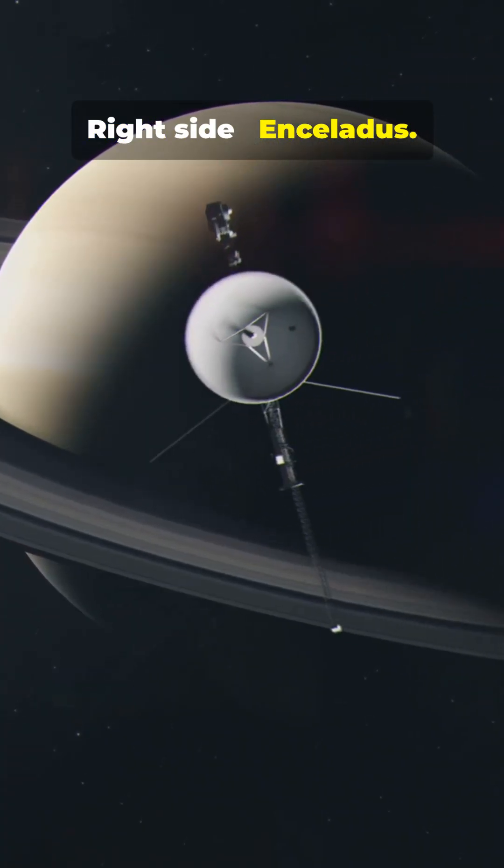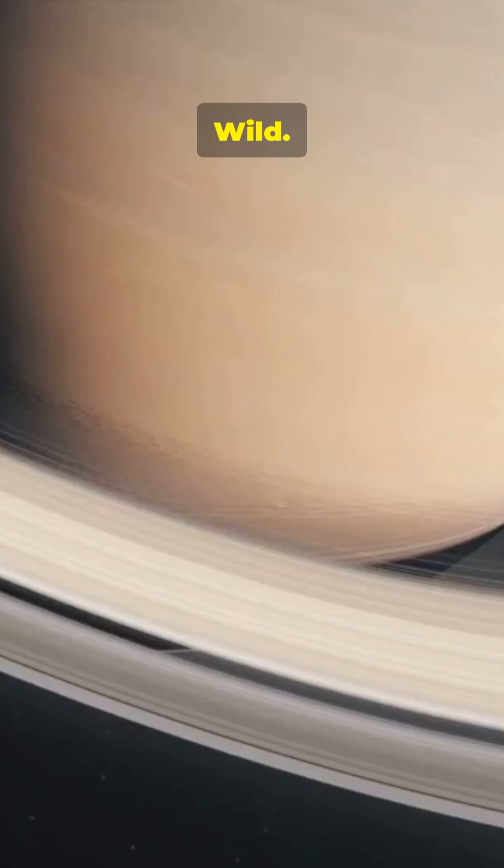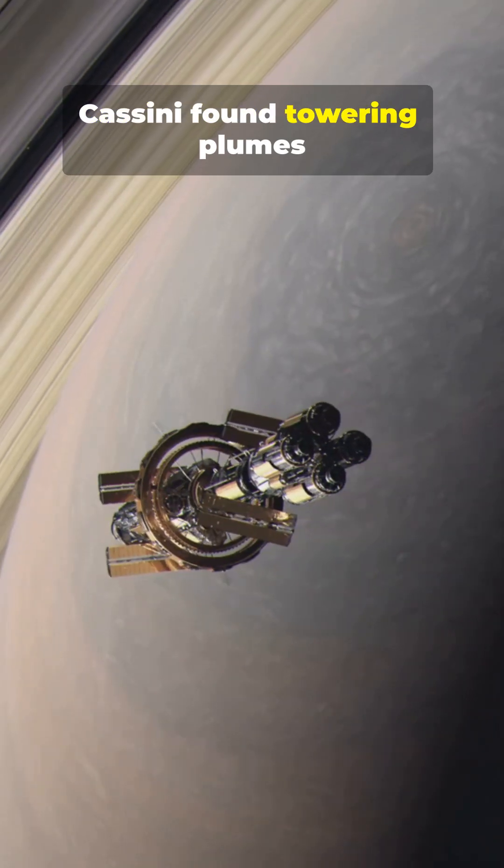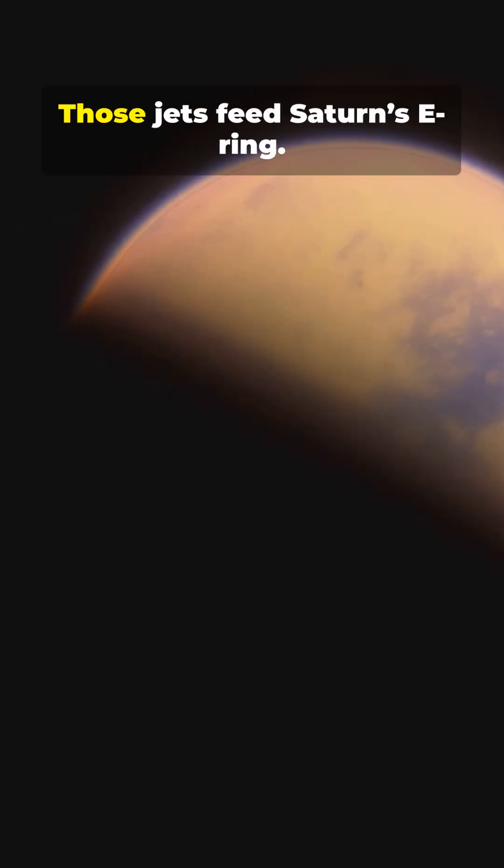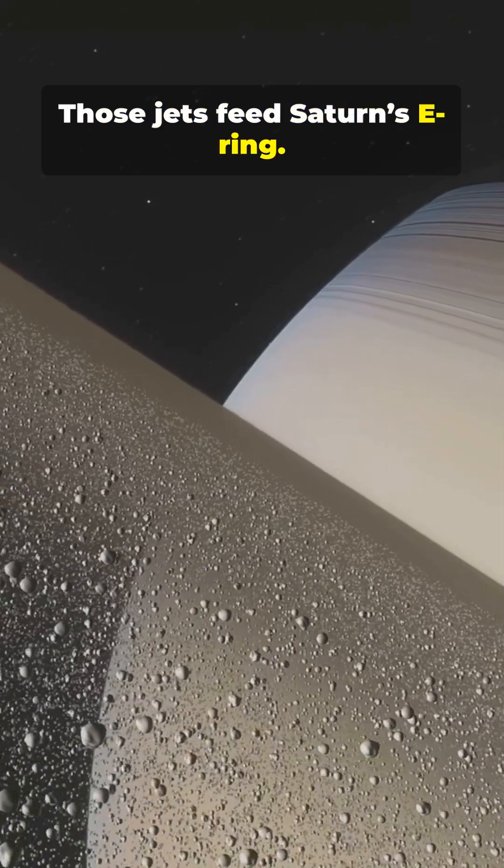Right side, Enceladus. Small, bright, wild. Cassini found towering plumes of water. Organic molecules. Heat from its core. Those jets feed Saturn's E-ring. They hint at a warm ocean under the ice.